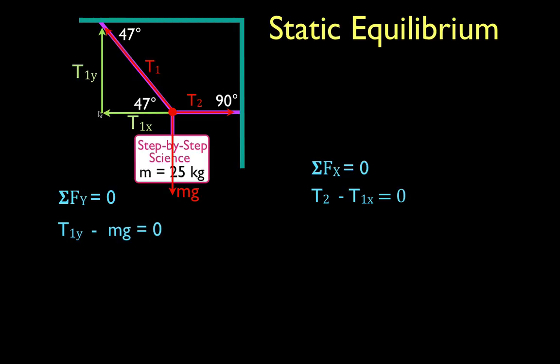Now, I'm going to write out a term or solve for each of these four things, T1y, mg. We're not going to do T2 because we're trying to solve for T2, and we're going to write out a term for T1x, and then we'll substitute those into our equation and solve for T1 and T2. So, the easiest one, I think, to do first is mg because we know m and we know g.